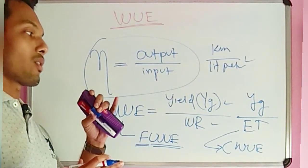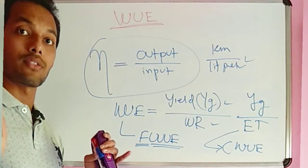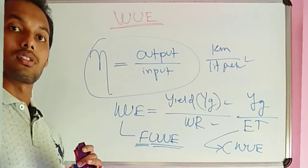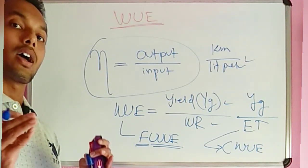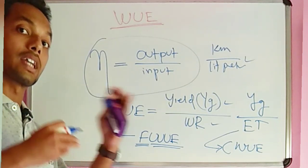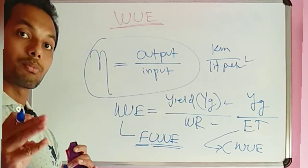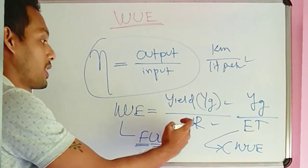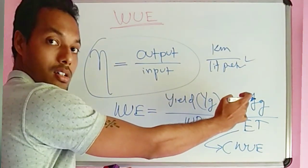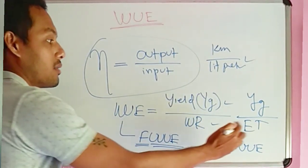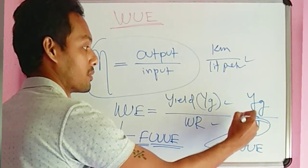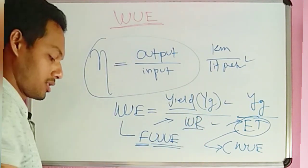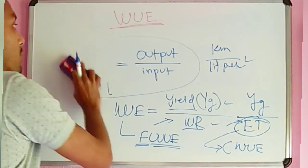Water use efficiency is needed when we have limited water resources or in drought conditions, to manage water judiciously and maximize yield. There are two types: field water use efficiency (yield/water requirement) and crop water use efficiency (yield/ET). Physiologists generally use yield/ET, while agronomists and soil scientists use yield/water requirement. So what is the unit of water use efficiency?